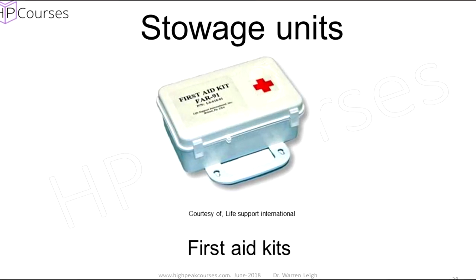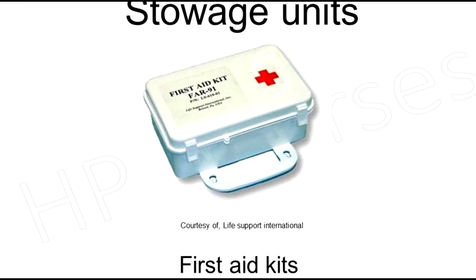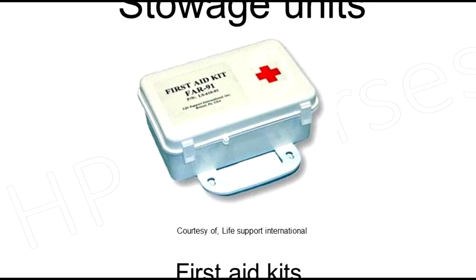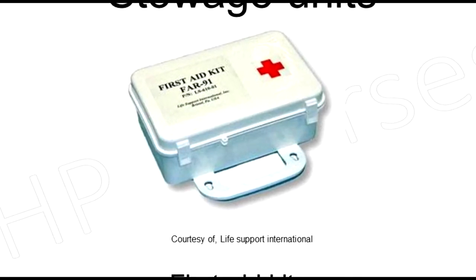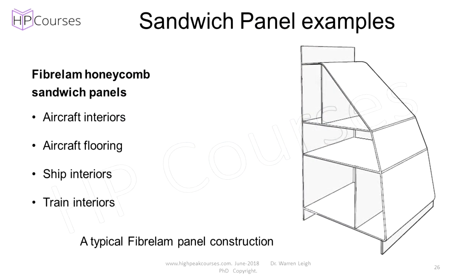Here is a typical first aid kit for aviation use. The fabrication of aircraft interiors include stowage units. They're assembled from a structural glass fibre with a phenolic resin and honeycomb core composite sandwich panel called Fiberlam, made by a company called Hexcel. The company first started out in the south of Great Britain in the 1940s and is now well known worldwide. The image here is a generic shelving unit, courtesy of Hexcel. The construction is very similar to that of a galley.